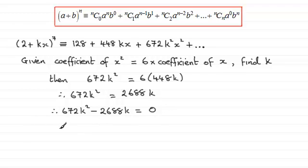Now I'd want to factorize this, and I notice that 672 is a common factor as well as k. So factorizing this, we're going to have k, and 672 goes into 2688 four times.